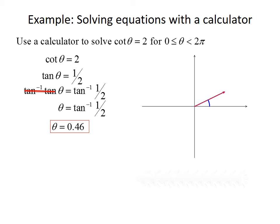Theta equals 0.46 lives in the first quadrant. But tangent is also positive in the third quadrant, so there's a similar angle there with a tangent value of 1/2. To find this angle, we take pi and add the measure of the angle we found: π + 0.46, giving approximately 3.61. So the two values of theta that give us a cotangent of 2 are 0.46 and 3.61.